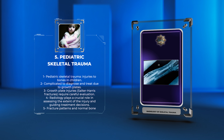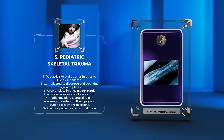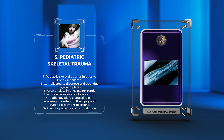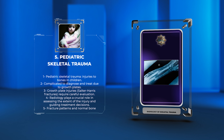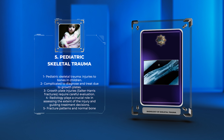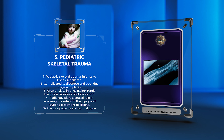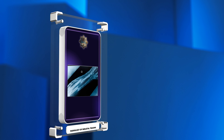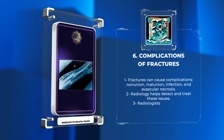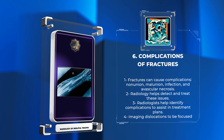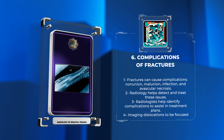Let us start by discussing the importance of fracture classification systems. Fracture classification is essential for effective communication, treatment planning, and patient care. The AO/OTA classification system categorizes fractures into three main types and further classifies them based on location and pattern. Radiologists play a crucial role in providing important information to guide decision-making by the healthcare team.